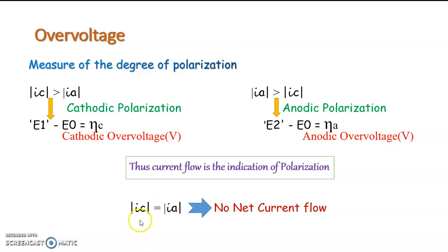When Ia is equal to Ic, there is no net current flow due to the formation of equilibrium — that is, the rate of forward reaction and the current densities Ia and Ic have the same magnitude. Thus, the net current flow indicates polarization, and that degree of polarization is obtained by measuring the overvoltage. If it is less than the equilibrium potential, it is η_c, called cathodic overvoltage, and we can say that cathodic polarization occurred. If it is greater than the equilibrium potential, it is called anodic overvoltage and we can say that anodic polarization occurred.